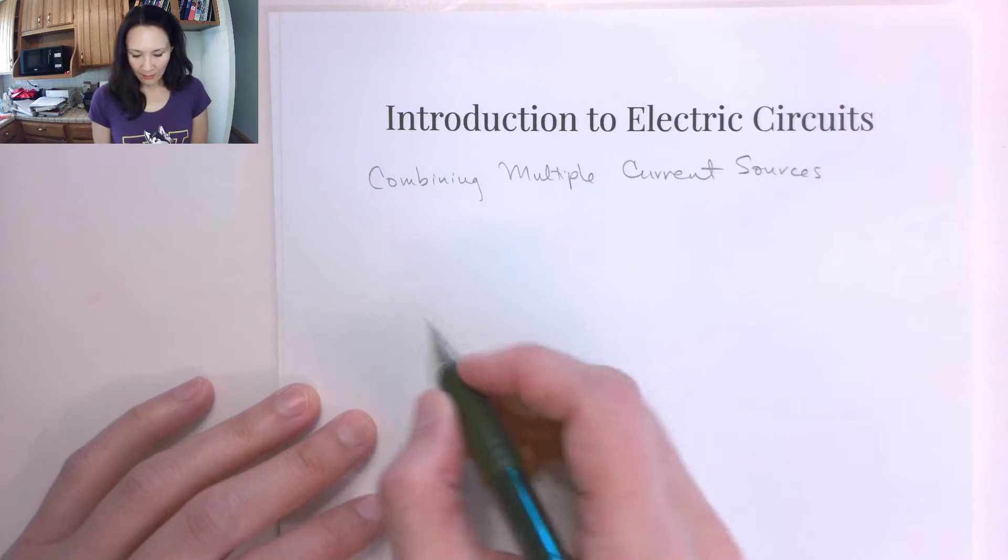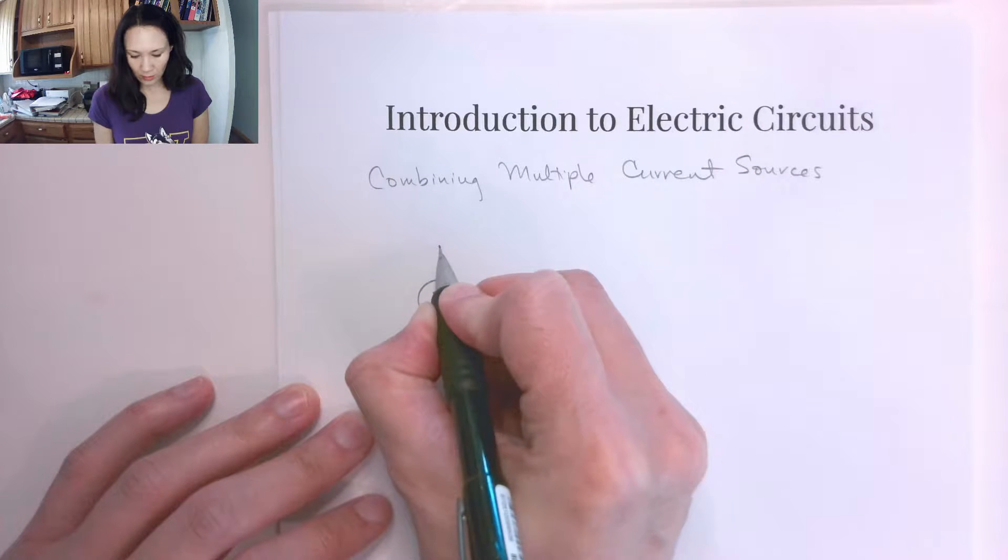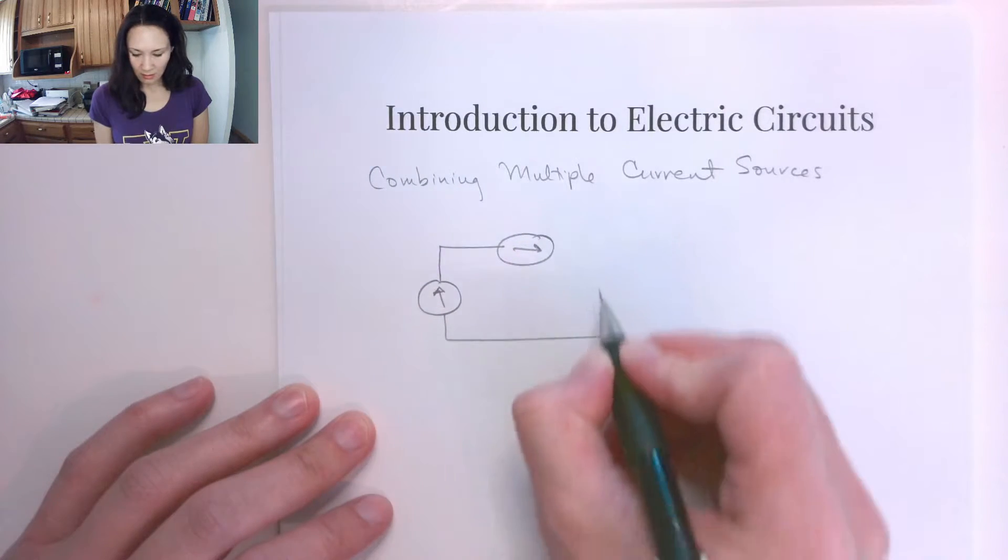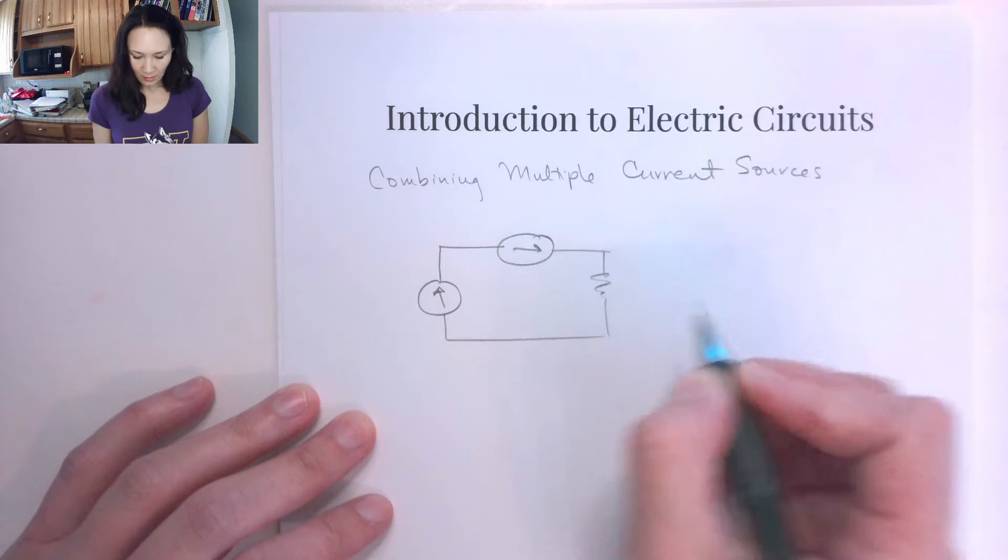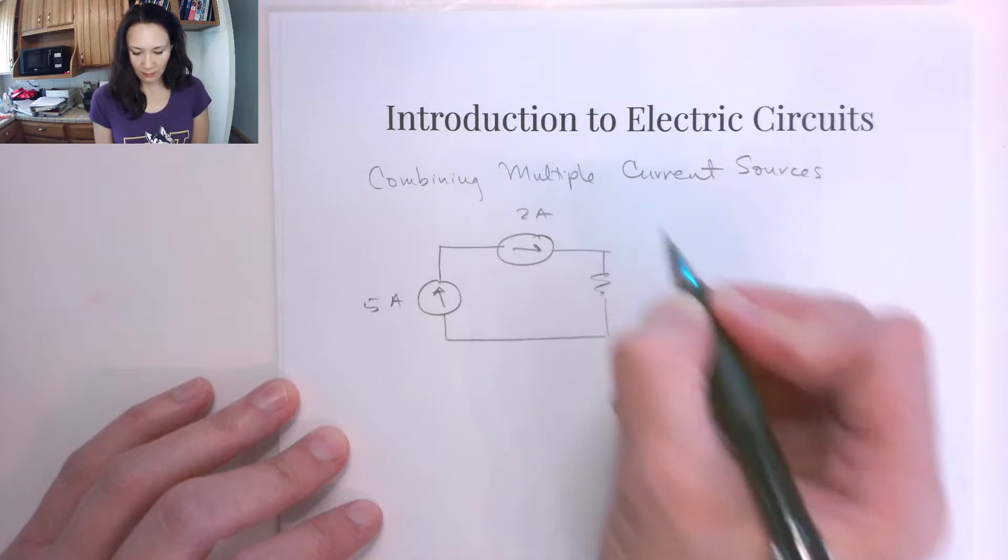Now let's look at what happens if we have multiple current sources in a circuit. So suppose we have something like this. Let's say this is a 5 amp source and this is a 2 amp source.